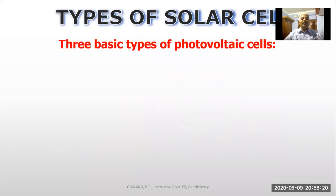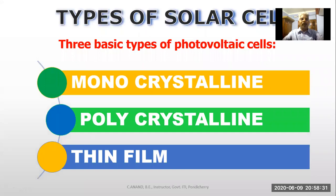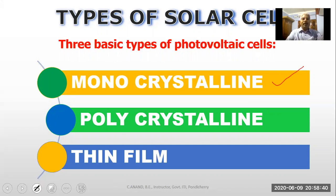There are three basic types of photovoltaic cells. One is monocrystalline, another type is polycrystalline, and another one is thin film. So there are three basic types of solar cells: monocrystalline, polycrystalline, and thin film.